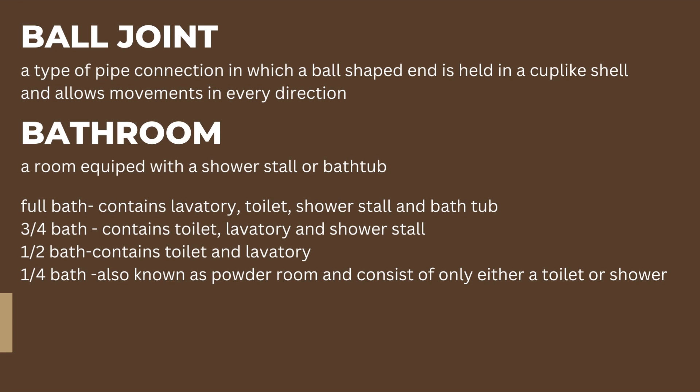Bathroom: a room equipped with a shower stall or bathtub. There are four types of bathroom. The full bath contains lavatory, toilet, shower stall, and bathtub. The three-quarters bath contains toilet, lavatory, and shower stall. The one-half bath contains toilet and lavatory. The one-quarter bath, also known as a powder room, consists of only either a toilet or shower.